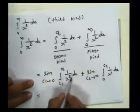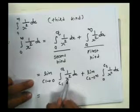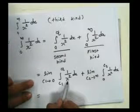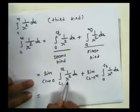The integration of 1 upon x squared is minus 1 upon x.